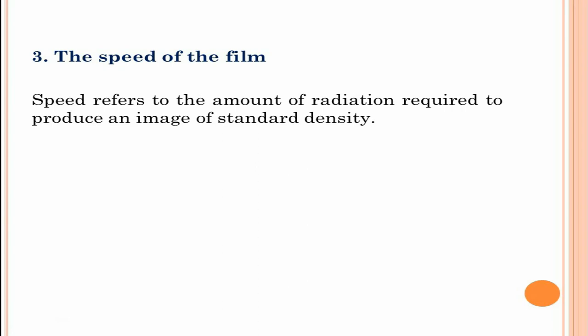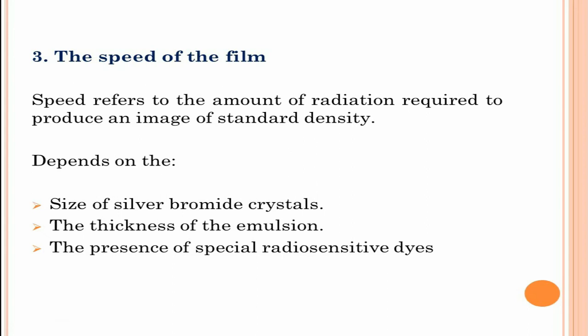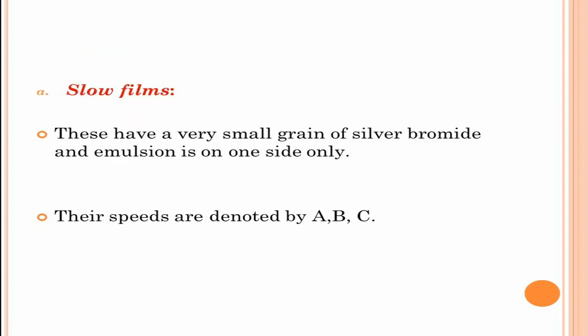Next classification is based on film speed. Speed refers to the amount of radiation required to produce an image of standard density. Higher film speed means less exposure is required compared to slow-speed films to form a similar image of same contrast and density. Film speed depends on factors such as size of silver bromide crystals, thickness of emulsion, and presence of special radiosensitive dyes. Based on speed, they can be classified into slow films and fast films. Slow films have very small grains of silver bromide and emulsion on one side only. They give better definition but exposure required is more and are not routinely used. An alphabetical classification is used to identify film speed, denoted by A, B and C.